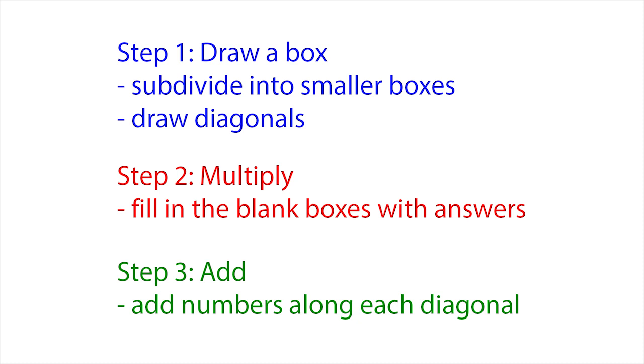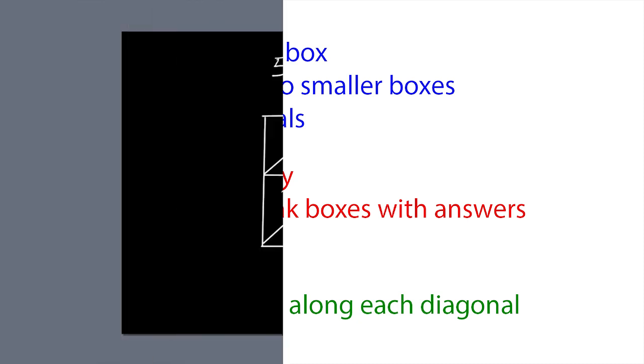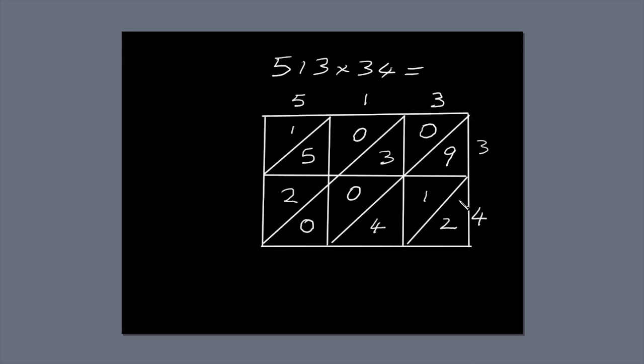Finally, we're going to add up the numbers along the diagonals. I'll circle each diagonal and show you what I mean. The first diagonal only has one number. 2. So write 2 directly below the diagonal.